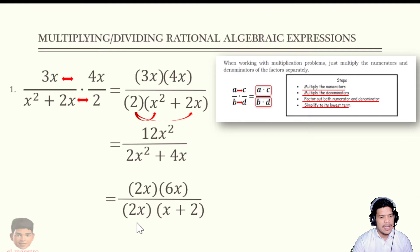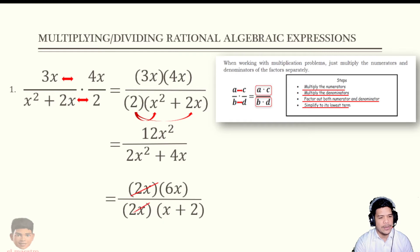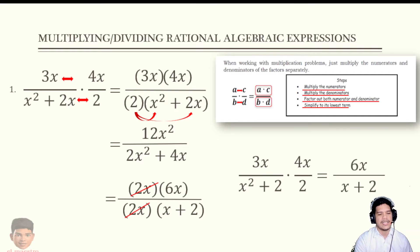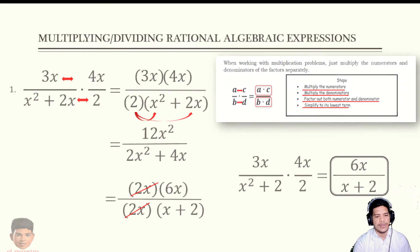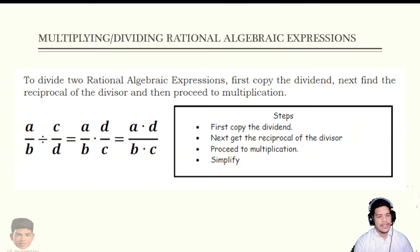Using the distribution method: 2x times x gives back 2x squared, and 2x times 2 gives back 4x. So we can cancel out the common factor 2x. What remains is 6x over (x plus 2). Notice that the crucial knowledge here is how to factor algebraic expressions and how to simplify them. The answer is 6x over (x plus 2).